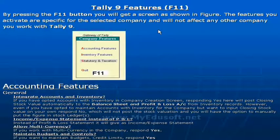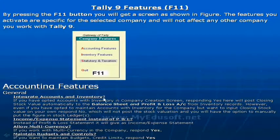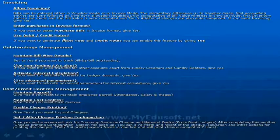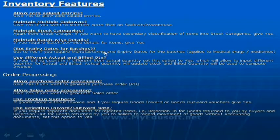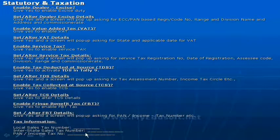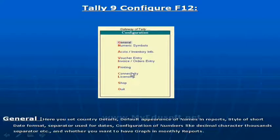We gave a clear description on accounting features and we can learn about the features clearly — how they should be applied when we record a transaction. We show accounting features briefly, like general features, invoicing, outstanding management, and cost or profit centers management. In inventory features, we can see features under order processing, and in statutory and taxation we can see those types of features. Next one is configuration.